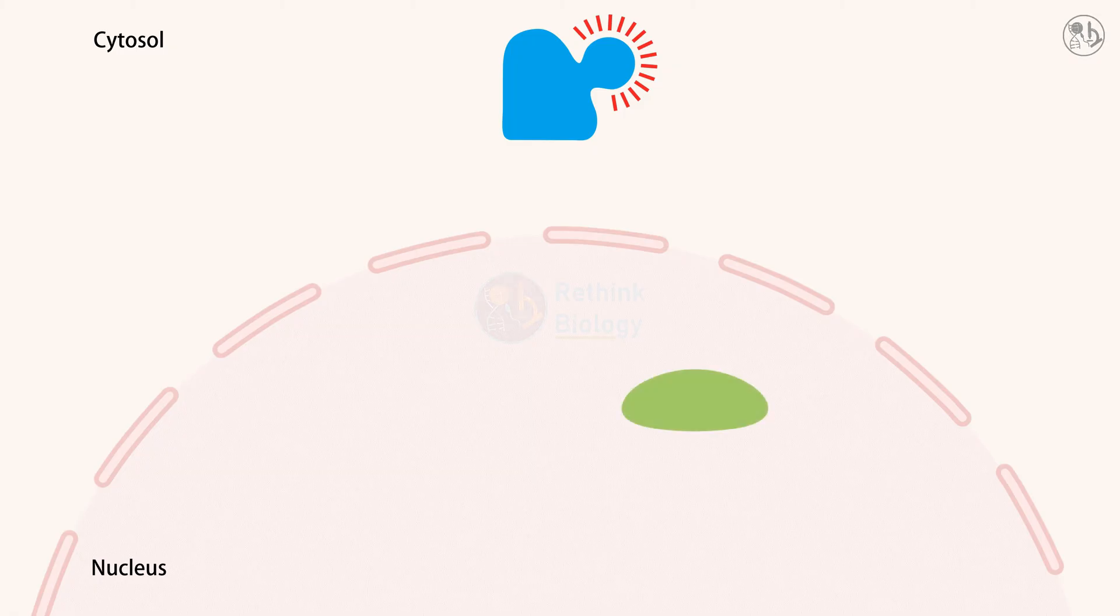One example of an effector protein is CREB, which stands for CAMP response element binding protein. PKA can then enter the nucleus where they phosphorylate the transcription regulatory protein CREB.